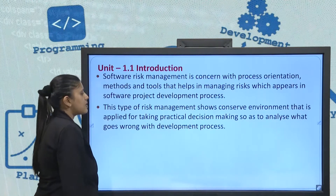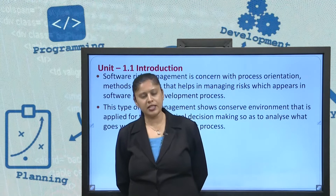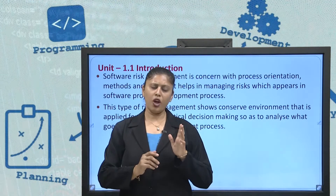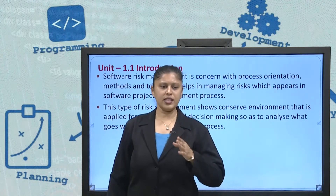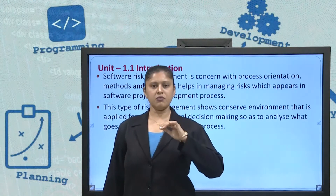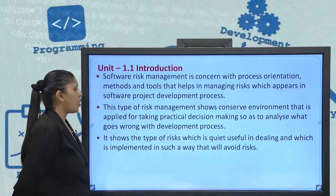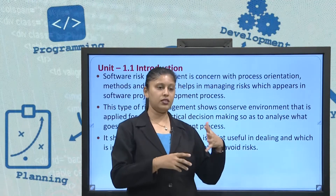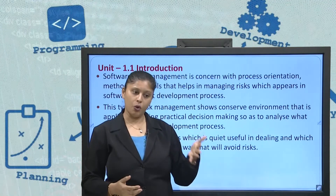This type of risk management shows a conservative environment — it is applied for taking practical decision-making. Why do I require Software Risk Management? It will help me take practical decisions at times, which will say that if a certain risk is coming, you have to practically take some decision on that — to analyze what goes wrong with the development process, what is actually hindering your development. Software Risk Management helps us to analyze the risk which may come in the near future, and it even sometimes avoids the risk. It helps in detection, but it even helps in avoiding certain risks from the beginning.